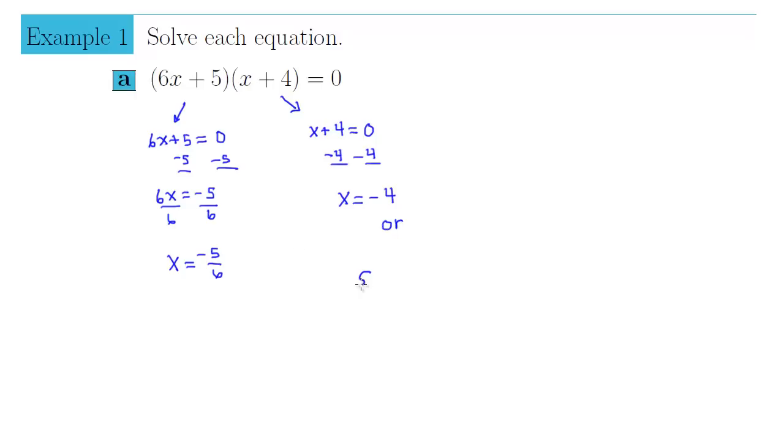Thus, our solution set simply consists of the two numbers, negative 4 and negative 5 sixths. Those two answers solve our quadratic equation.